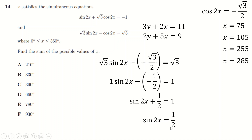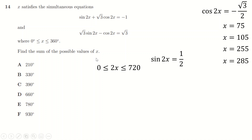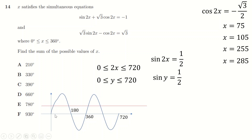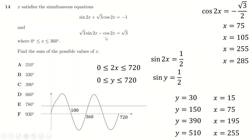Finding solutions of sin 2x = 1/2: this gives 2x = 30°, 150°, 390°, 510°, so x = 15°, 75°, 195°, 255°. The only x values in both lists are 75° and 255°. These are the only values satisfying both equations, giving a sum of 75 + 255 = 330°.